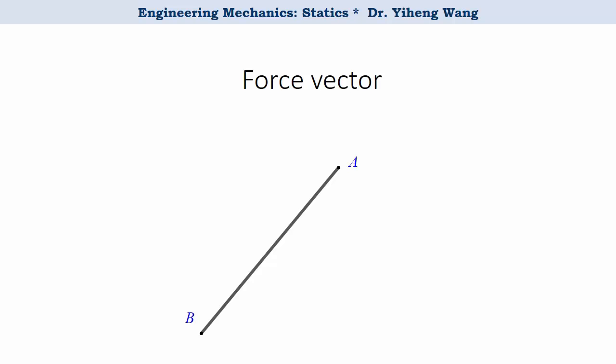We can also express force vectors as Cartesian vectors. For example, for the tension force F in the cable directed from point A to point B, we know that we can express it as its magnitude multiplied by a unit vector that describes its direction. How do we find this unit vector?